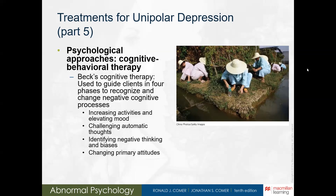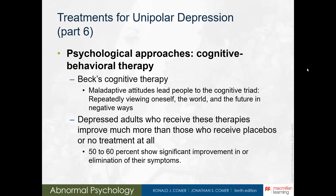In Beck's cognitive therapy, he guides clients through four phases to recognize and change negative cognitive thought processes: first, increasing activities and elevating mood; next, challenging automatic thoughts; then identifying negative thinking and biases, also known as cognitive distortions; and finally, changing primary attitudes. Beck viewed unipolar depression as resulting from a pattern of negative thinking triggered by current upsetting situations, an approach very similar to Albert Ellis's rational emotive therapy.